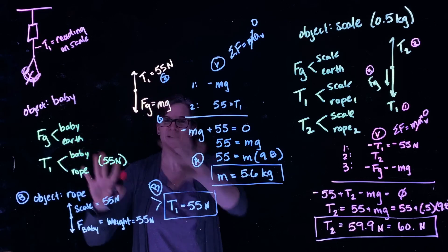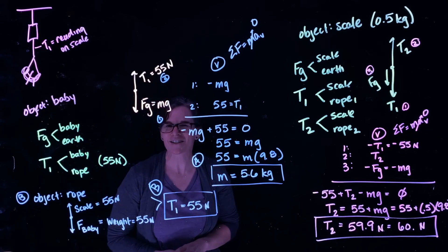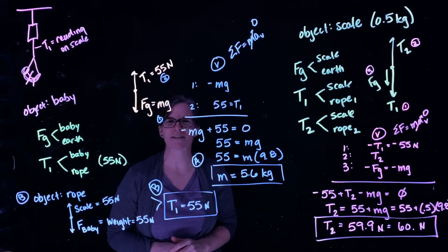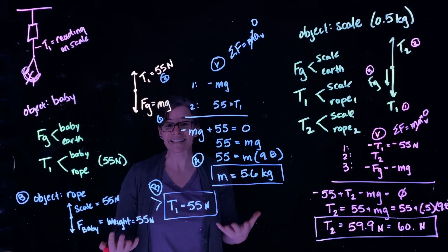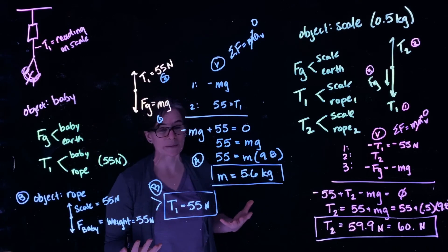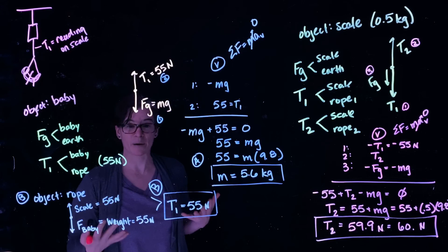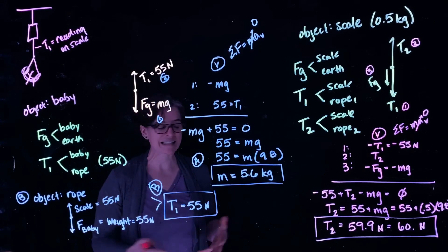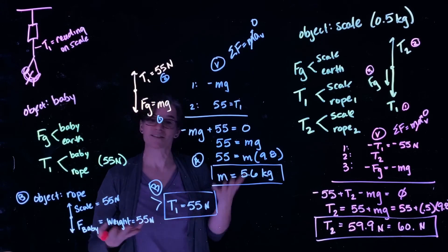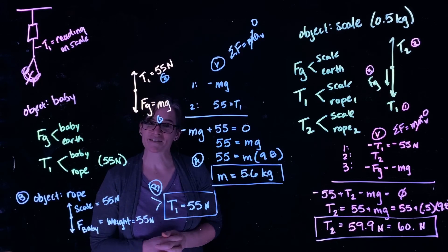So it should be a little higher than the rope that's just holding the baby. By remembering our interactions, thinking about those interactions, recognizing what the spring scale does and how it operates, and then solving for our variables of interest, we've worked through this problem.